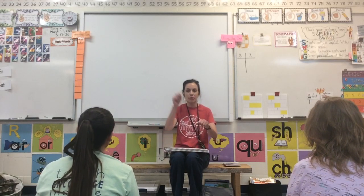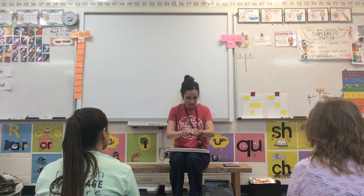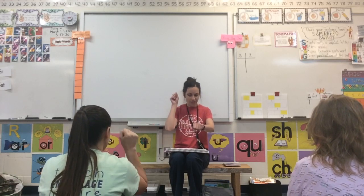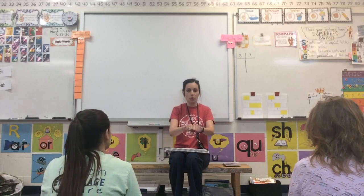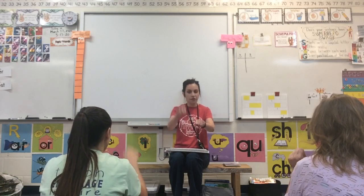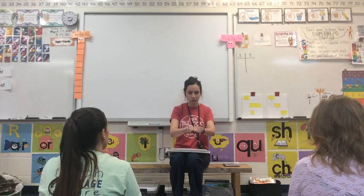Now we're going to change a sound — we're going to substitute a sound. That means we take one sound out and put in another one. So if I said the word coy, you would say coy, then I'd say change c to t — toy. Can you say the word toy? Toy. Change t to j — the word is joy. Say joy: joy. Change j to b — the word is boy. Coil: change c to b — boil. Change b to f — foil. Say the word foil: foil. Change f to s — soil.